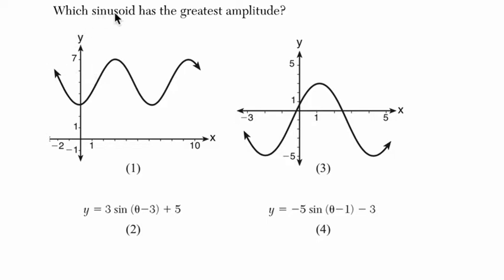Okay, so they say which sinusoid has the greatest amplitude? Now sinusoid, of course, that just describes waves that are either cosine or sine waves in the sense that they repeat themselves and have a period. They're periodic and they're a version of a sine because cosine and sine waves are just out of phase with each other. They're really the same thing. You can kind of shift one over and get the other.